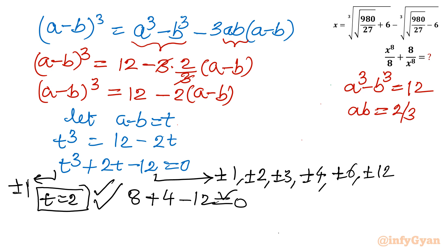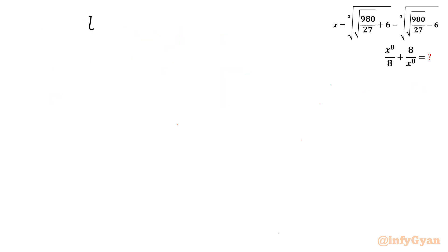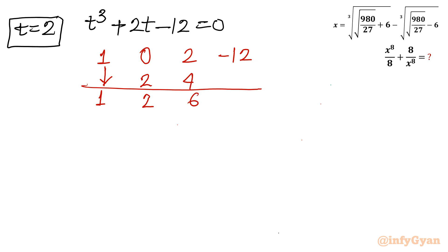Now I will use the synthetic division method. t cube plus 2t minus 12 equals 0, and our base solution is t equals 2. Let us write all the coefficients of this cubic equation. The coefficient of t cube is 1, coefficient of t square is 0, coefficient of t is 2, constant coefficient is minus 12. Put one line over there. Leading coefficient as it is: 1. 1 times 2 is 2, so we get 2. 2 times 2 is 4, so we get 6. 2 times 6 is 12, so we get 0. Now these are our coefficients for the quadratic equation. The equation would be t square plus 2t plus 6.